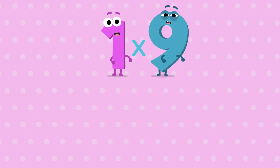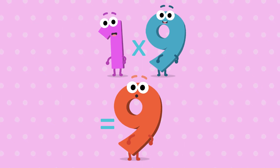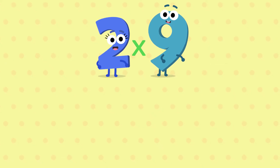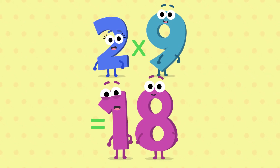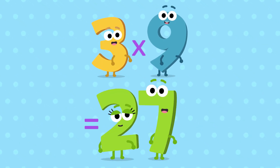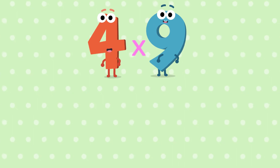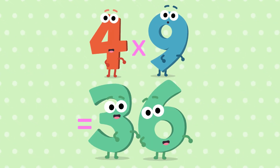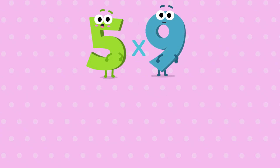1 nine is 9, 2 nines are 18, 3 nines are 27, 4 nines are 36, 5 nines are 45,